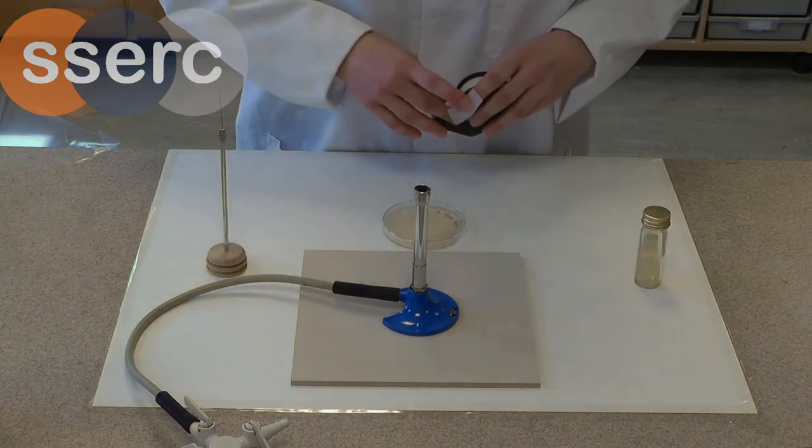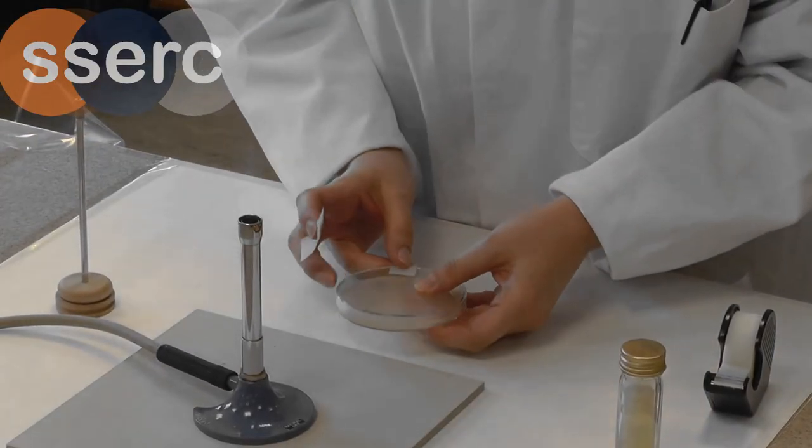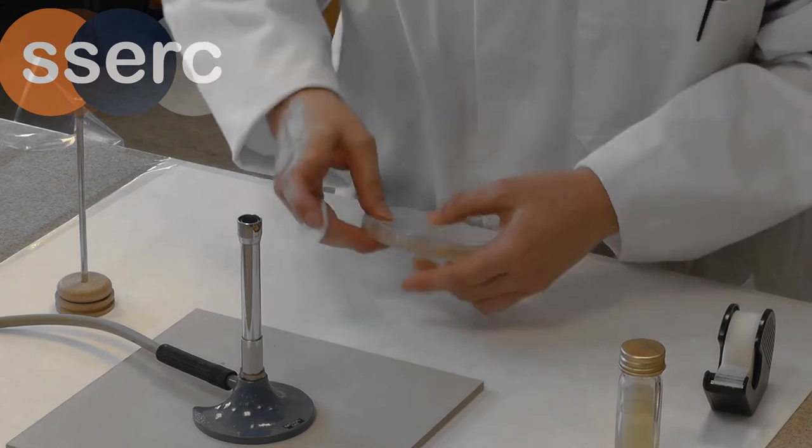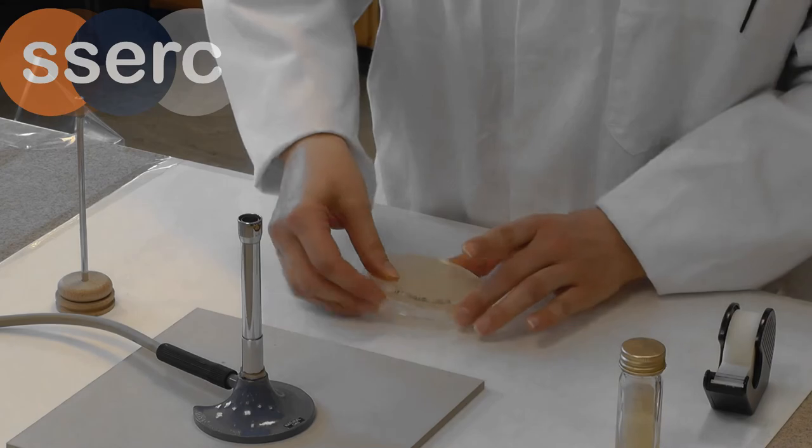The plate should then be sealed with two small pieces of tape opposite one another. Don't seal it all the way around, we don't want to create anaerobic conditions.